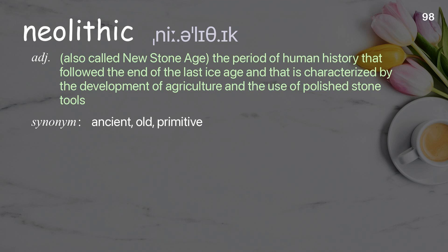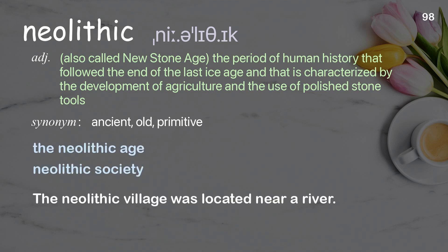Neolithic: also called the New Stone Age, the period of human history that followed the end of the last ice age and that is characterized by the development of agriculture and the use of polished stone tools. Examples: the Neolithic age; Neolithic society. The Neolithic village was located near a river.